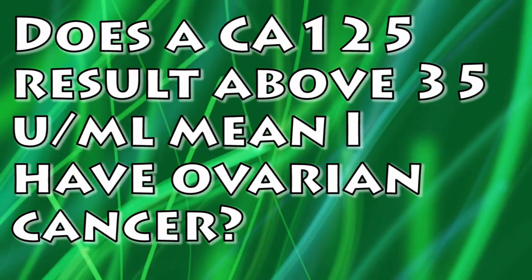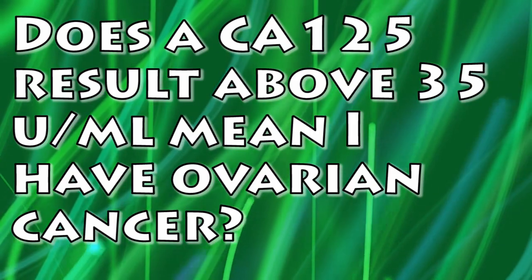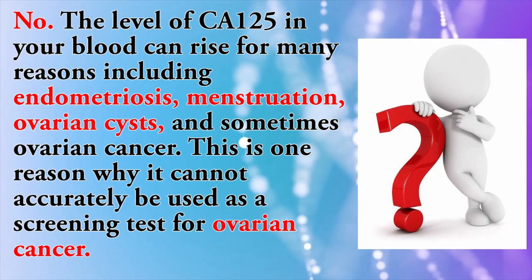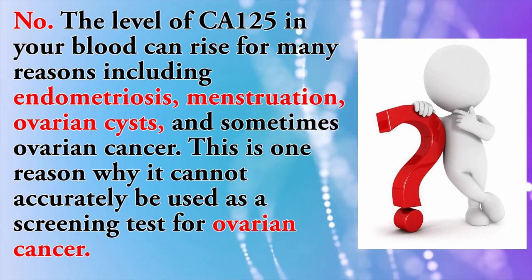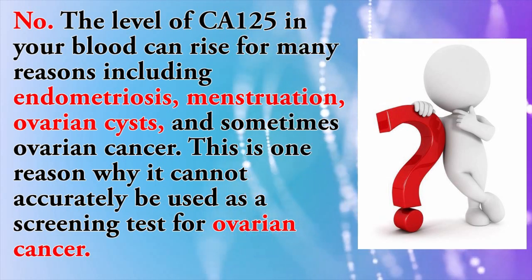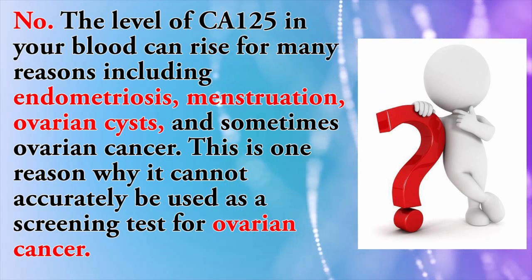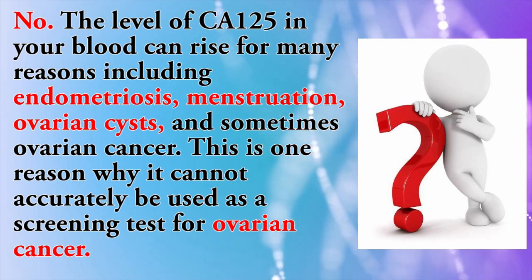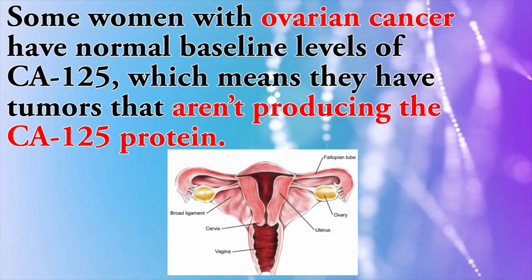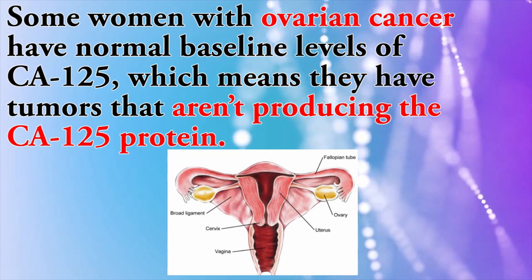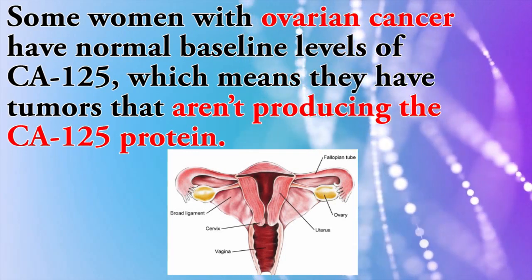Does a CA-125 result above 35 units per milliliter mean I have ovarian cancer? No. The level of CA-125 in your blood can rise for many reasons, including endometriosis, menstruation, ovarian cysts, and sometimes ovarian cancer. This is one reason why it cannot accurately be used as a screening test for ovarian cancer. Some women with ovarian cancer have normal baseline levels of CA-125, which means they have tumours that are not producing the CA-125 protein.